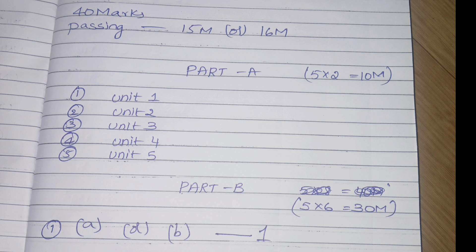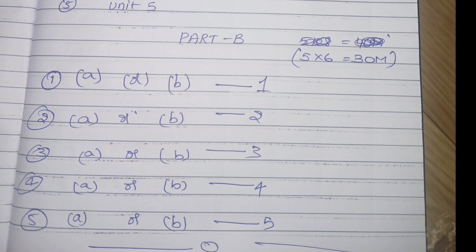This is only a 40-marks paper, and the passing marks is 15 or 16. In Part A you need to attempt 5 questions, each carrying 2 marks — write at least 6 to 7 lines per question. In Part B, each question carries 6 marks, so 5 questions totaling 30 marks. Each question will have an internal choice, so in each unit you attempt either question A or B.